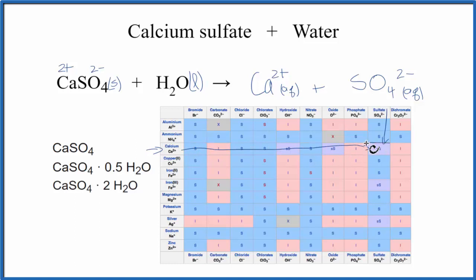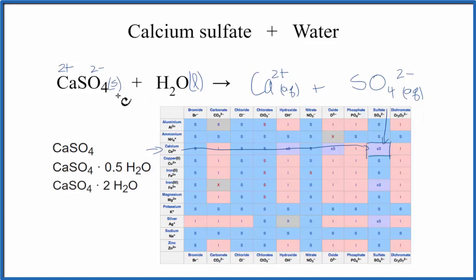And we have "SS" here, which means it's slightly soluble. Since it's slightly soluble, just a little bit of this will actually dissolve and split apart into its ions — the calcium ion and the sulfate ion. But a lot of it won't dissolve. Much of it will remain as a solid and will probably just sink to the bottom of the container — the beaker, the test tube — and just be wet calcium sulfate.